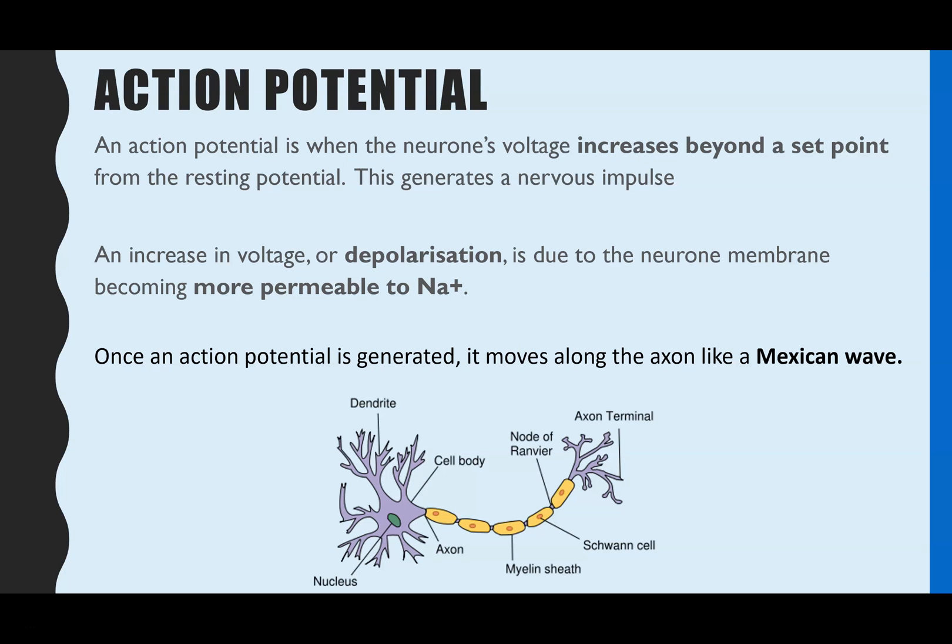So first of all, what is an action potential? This is when the neuron's voltage, and in particular we're focusing on the axon in the neuron, increases beyond the resting potential, which is minus 70 millivolts. And that will then generate an action potential, or in other words, a nervous impulse.